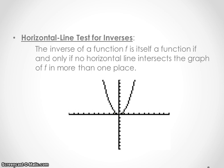The last video leads us into the horizontal line test for inverses. The inverse of a function f is itself a function if and only if no horizontal line intersects the graph of f in more than one place. So this is the original graph f. Essentially if we were to graph the inverse we'd have to reflect it along that line, the y equals x.